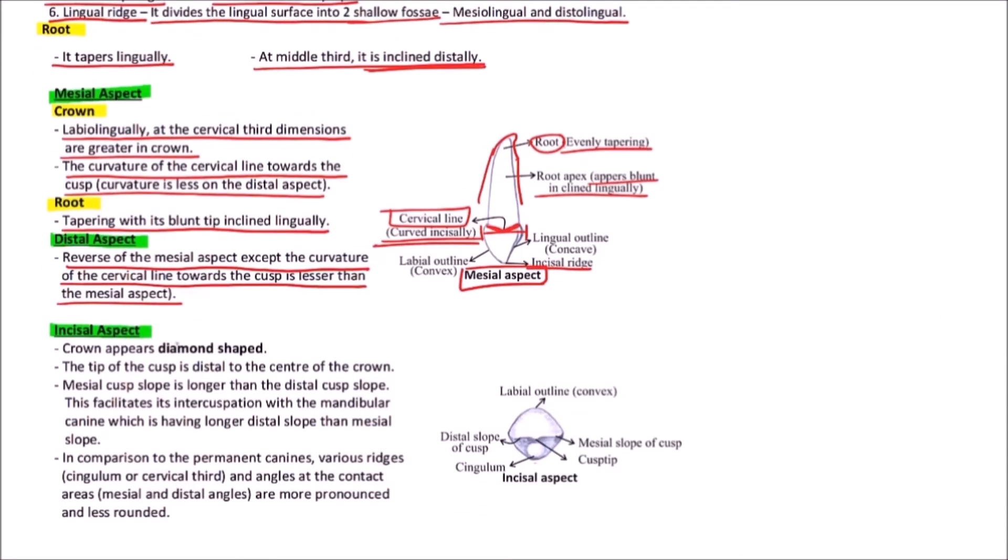Now the incisal aspect, which is very important. The crown appears to be diamond-shaped. The tip of the cusp is distal to the center of the crown.